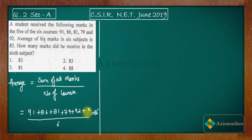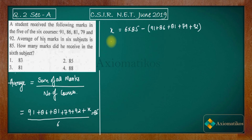So we have to calculate x. If you calculate this, you will end up with x = 81. So it was a very easy question from the general aptitude part.